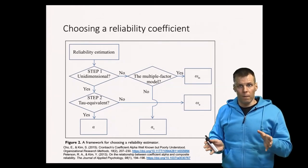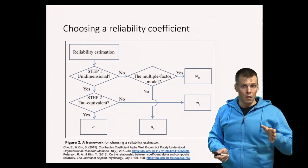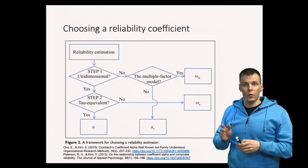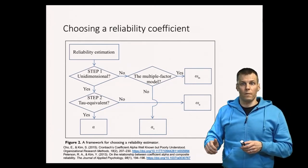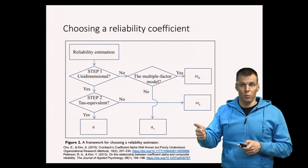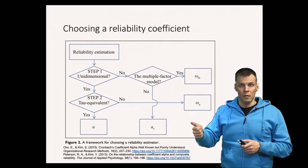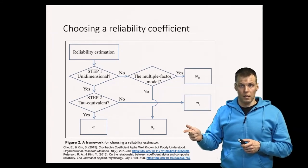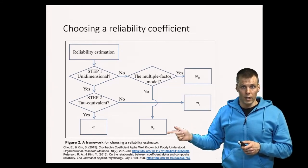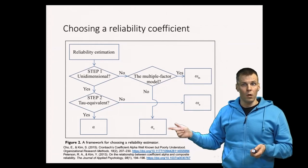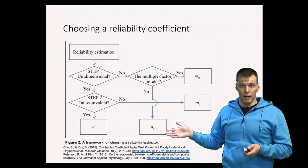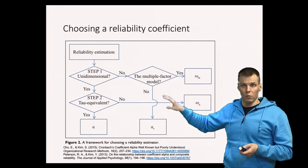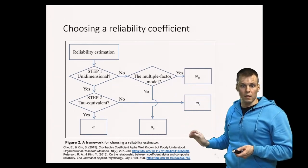So it's not that you would always use alpha, but instead you have to make a decision based on the nature of your data. And if you use alpha you have to justify the unidimensionality assumption which you do with the factor analysis, and then you have to justify the tau equivalence assumption which basically means that all the indicators are equally reliable which you also do with the factor analysis. And if those assumptions don't hold then alpha is not ideal but you have to look at these other coefficients instead.